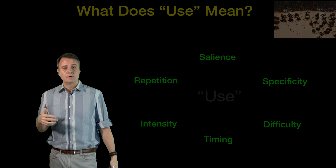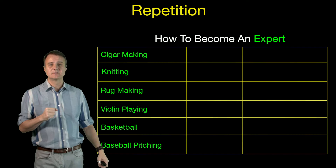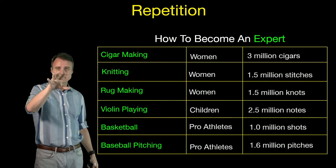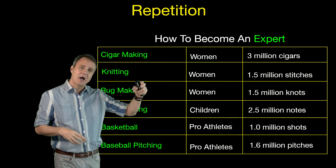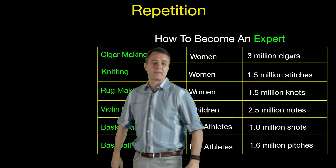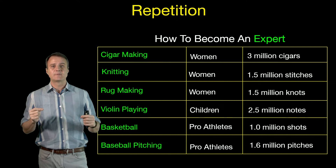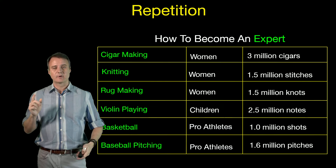To give a couple of examples of how important this is — repetition: as a physical therapist you know it matters. This summary shows how many repetitions it takes to become an expert in various fields. To become an expert cigar maker, you need to roll about 3 million cigars. To be a professional baseball pitcher, you need to throw about 1.6 million pitches. Keep that in mind when you're in the clinic, thinking about how many active repetitions your patient is actually making during therapy — we'll come back to that in the next lecture.